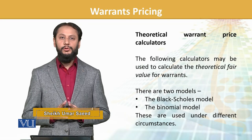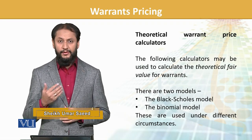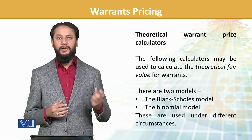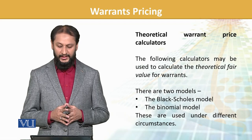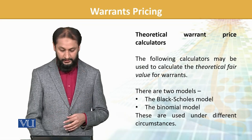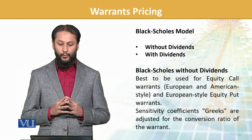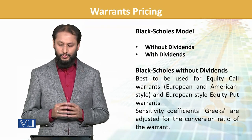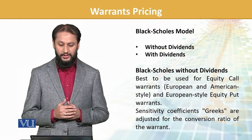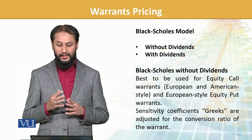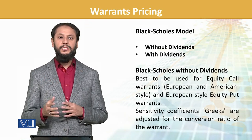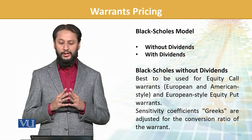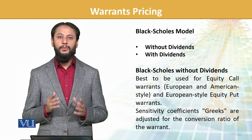So there are two main models: the Black-Scholes model and the Binomial model. You should recall ke binomial model hum ne pahle options mein discuss kiya tha, kyunki ye kaafi similar hai — with options, the factors are also similar. To woh hi dono models is mein bhi apply hote hain. Black-Scholes without dividend — best to use for equity call warrants, whether they are European or American style, and for European style put warrants. Sensitivity coefficient Greeks are adjusted for the conversion ratio of the warrants.